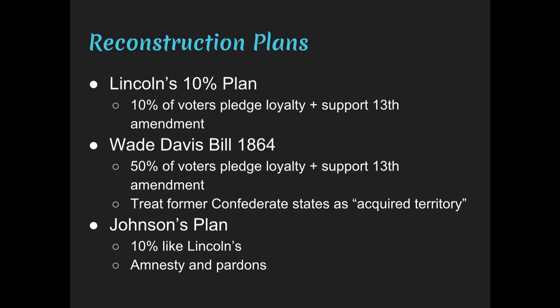Two congressional factions emerged among Republicans. The majority were moderates who supported Lincoln's plan and believed Confederate states should be reintegrated as soon as possible — let the past be the past. However, a minority radical group wanted the South's social structure to be completely uprooted. They wanted planters to be punished and Blacks to be protected before states were admitted to the Union.